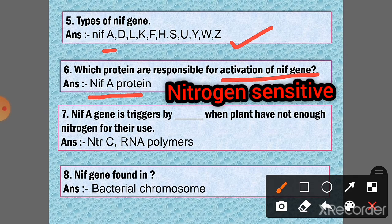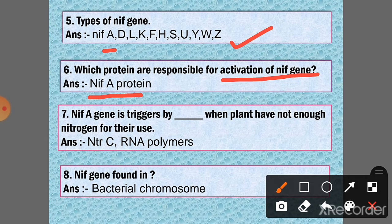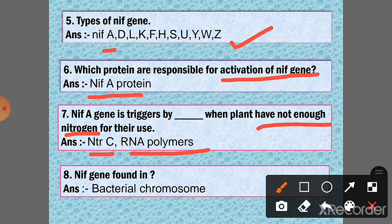Question 7: nif A gene is triggered by when plant have not enough nitrogen for their use. Answer: NtrC, RNA polymerase. When plant have not enough nitrogen for their use, NtrC is one type of RNA polymerase.